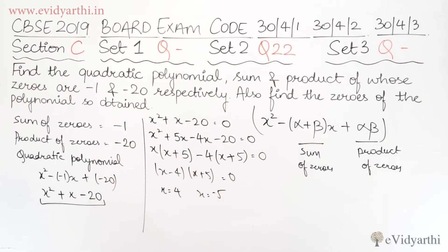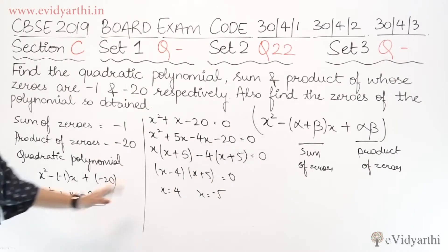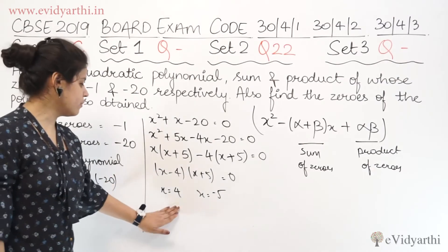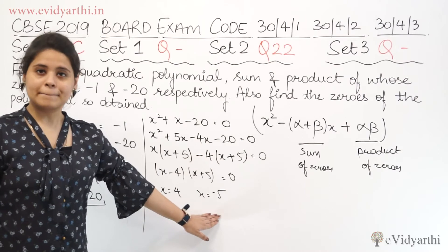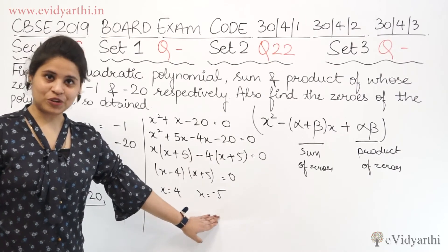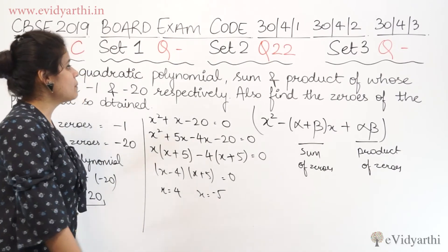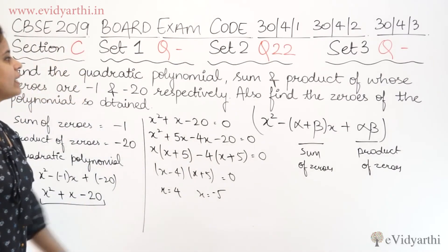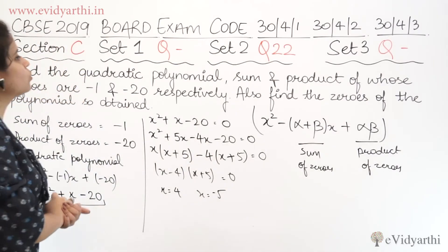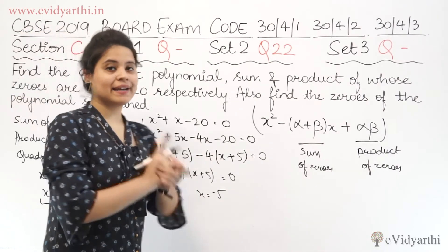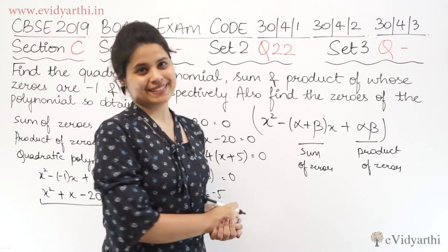So the values of x are 4 and minus 5. These are the zeros of the polynomial. That was question number 22 of set number 2. Let's move to the next question.